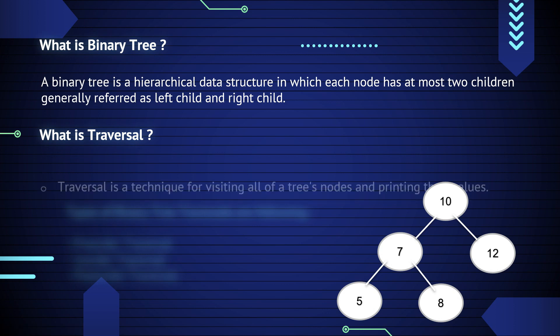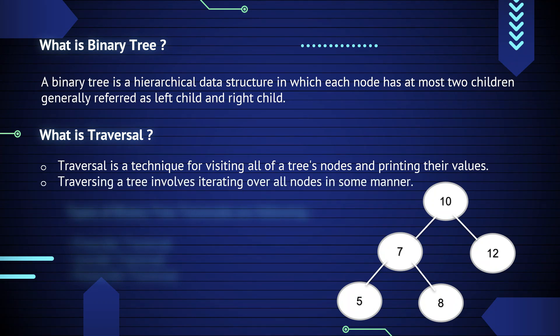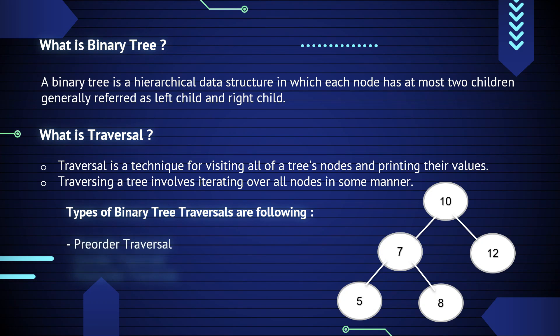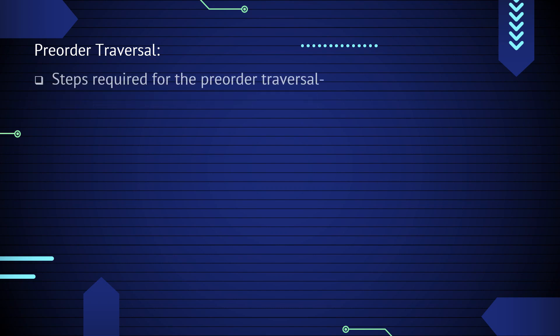The second concept is what is traversal. A traversal is a technique for visiting all of the tree's nodes and printing their values. Traversing a tree involves iterating over all nodes. The types of binary tree traversal are: the first is pre-order traversal, second is in-order traversal, and last is post-order traversal.